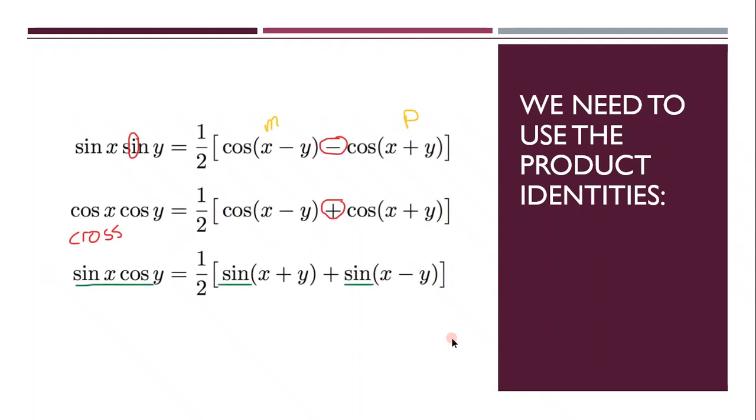So again, a handy trick for remembering these ones, it does save time on an exam, is that sin x, sin y will have the negative in it. And the cos x, cos y, it sounds like cross, so it'll have the cross in the middle. But these two both have cos in their product identities. But if you find a mixed one such as sin x, cos y, it has sin. This is the only one that has sin in the product identity formula.